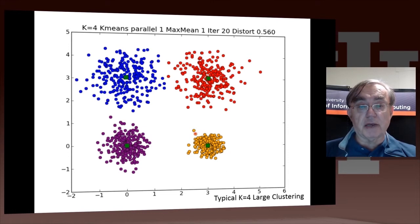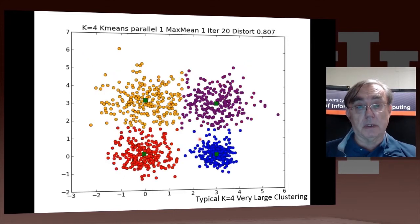Here we have the k equals 4 for large clustering, and it looks pretty nice. Here we have the very large clustering. k equals 4 has gone well. Again is spread out with a point at near and above 6.